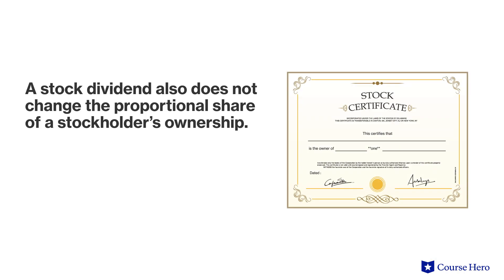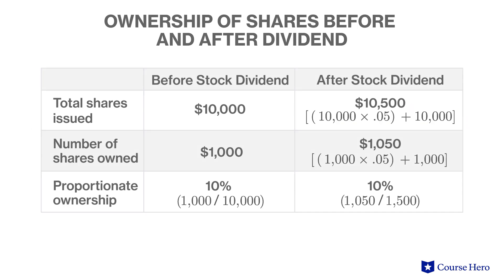A stock dividend also does not change the proportional share of a stockholder's ownership. For example, if a stockholder owns one thousand shares of the company's ten thousand outstanding shares, his or her ten percent ownership would not be altered by a five percent stock dividend, because each shareholder is receiving the same five percent and therefore everyone's percentage of ownership is the same before and after the stock dividend.